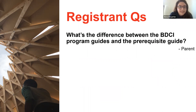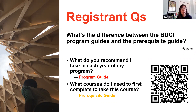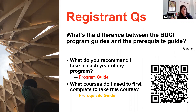What's the difference between the BDCI program guides and the prerequisite guide? On the BDCI degree planning page, we have program guides in written form as well as diagram form, plus the prerequisite guide. When you want to know what courses to take in each year of your degree, the program guide is the best one — it shows the breakdown from years one to four, including what to take in fall and winter semesters. If you want to know the relationship between courses in BDCI, that's when you use the prerequisite guide — for example, if you're eyeing a future course, you can work backwards to see what you need to take first.